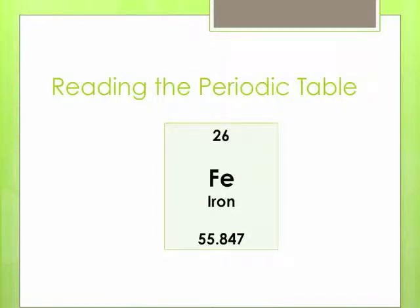Let's take a minute and talk about how you can tell a lot about an element by looking at the periodic table. I'm showing you an example here of what iron would look like on the periodic table. And if you look at this box, this number at the top, 26, is the atomic number.